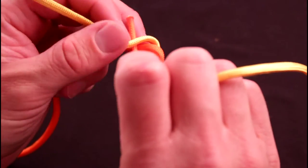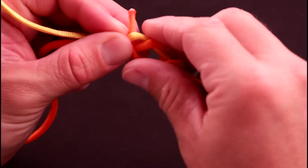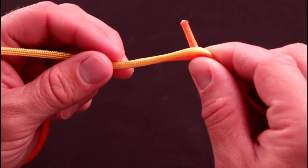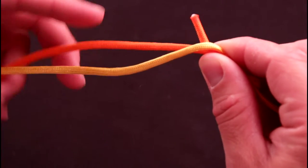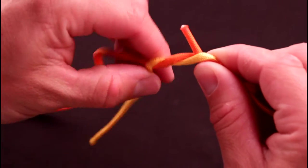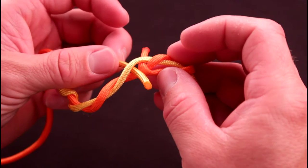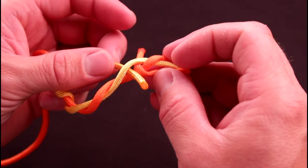Bring the tag end of the leader through the intersection of the two lines and pinch that together. Next, wrapping in the opposite direction, wrap the tippet up the leader. Then bring the tag end of the tippet through the same spot in the intersection but pointing in the opposite direction of the tag end of the leader.